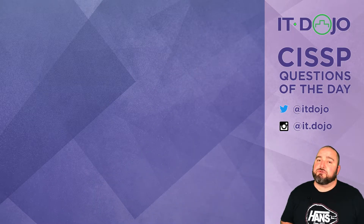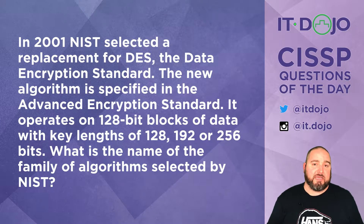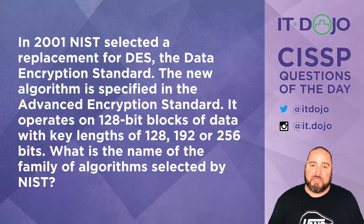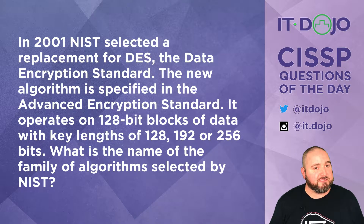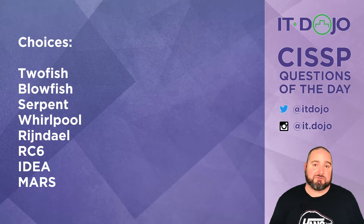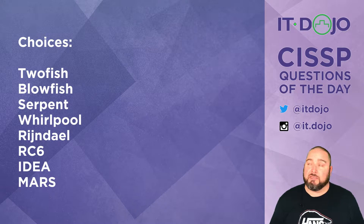Back in 2001, NIST selected a replacement for DES, the data encryption standard. This new family of algorithms operates on 128-bit blocks of data and supports key lengths of 128, 192, and 256 bits. What is the name of the family of algorithms that were selected to replace DES? Click pause if you need to, and when you're ready, click play and we'll talk them through.